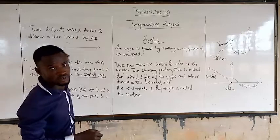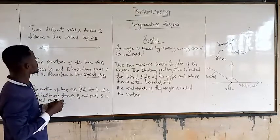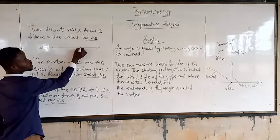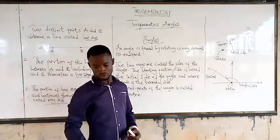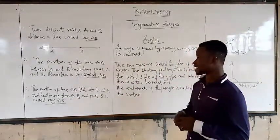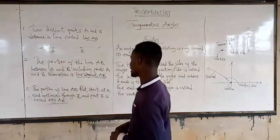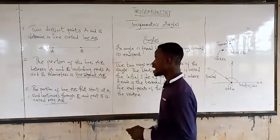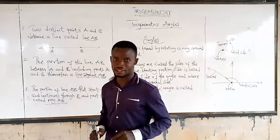This goes to negative infinity as well. To determine a line AB, we need to indicate these two distinct points, which are A and B. The portion of line AB between A and B, including points A and B themselves, is called a line segment.